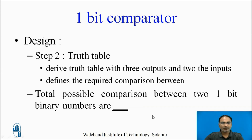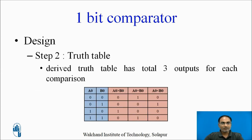The next step is the truth table. Let us derive the truth table for this one-bit comparator. The truth table contains two input columns and three output columns, and it defines the required comparison between the two input numbers. We can calculate the total number of possible comparisons with two one-bit binary numbers — we have four comparisons. The derived truth table looks like this.